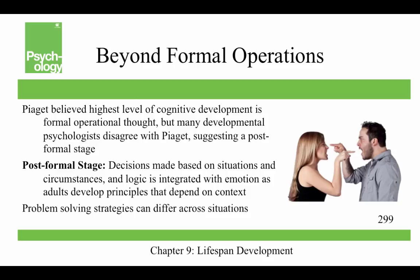Piaget believed the highest level of cognitive development is formal operational thought, but many developmental psychologists disagree, arguing there's a post-formal stage where decisions are made based on situations and circumstances, integrating logic with emotion as adults develop context-dependent principles. Problem-solving strategies can differ across situations — for example, arguing with a significant other might call for different strategies than arguing with someone at work.